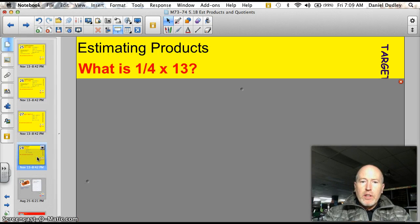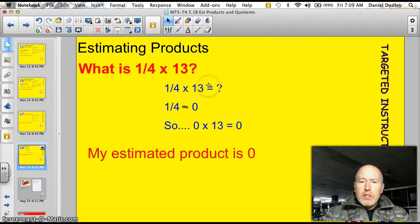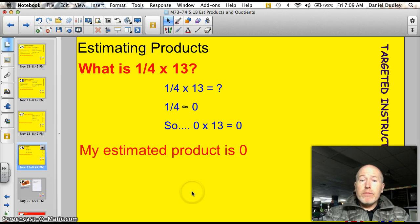One last one before the ticket. What is 1 4th times 13? Yikes. Give it a shot. I know you can do it. Let's see how you did. Well, 1 4th times 13. 1 4th, well, that's way less than a half, so we're going to call that 0. 0 times 13 is 0. My estimated product is 0. Once you get to be in 7th and 8th grade, going into high school, we'll practice multiplying that out and getting a closer estimate. But for this point, when we don't know how to multiply fractions, we're just going to go with rounding down.